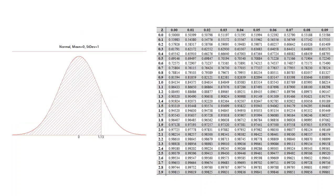You can also use the z-score table to do a reverse lookup to see what z-score is associated with a specific area. For example, if we want to know what value of z-score corresponds to an area of 0.87076 to the left of it, all we have to do is find 0.87076 on the table and see what value it corresponds to. As a result, we see that the area of 0.87076 corresponds to a z-value of 1.3.